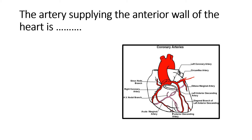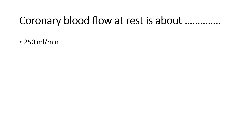The right coronary artery also gives small branches: the sinus node branches and the AV nodal branches. So the answer to the first question is: the left coronary artery supplies the anterior wall of the heart.